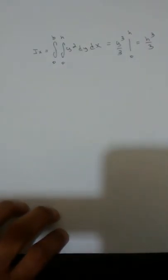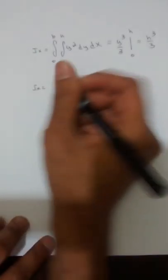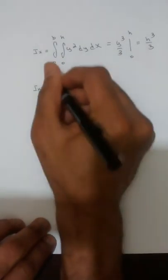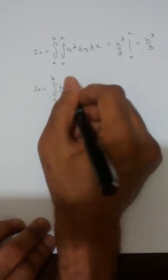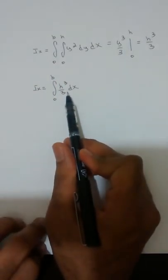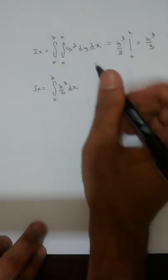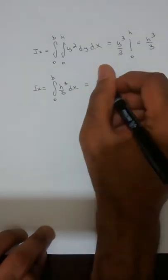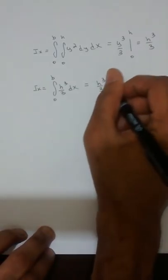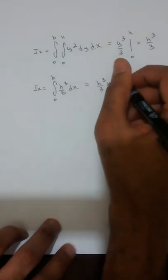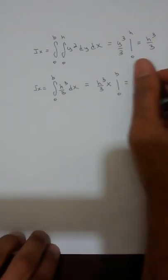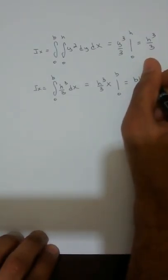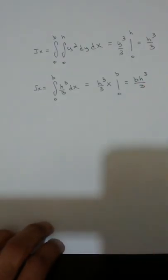Now we integrate this quantity with respect to x. I sub x is the integral from zero to b of h cubed over 3 dx. Notice that h cubed over 3 is a constant, so its anti-derivative is h cubed over 3 times x, evaluated from zero to b. Plugging in our upper and lower limits gives us b h cubed over 3.